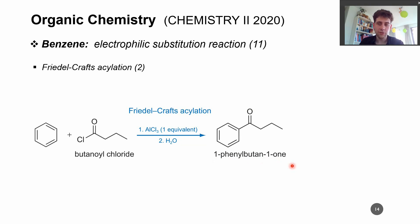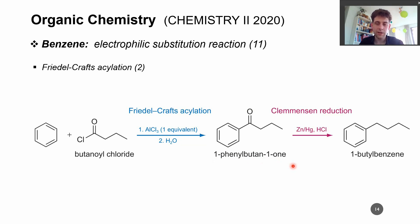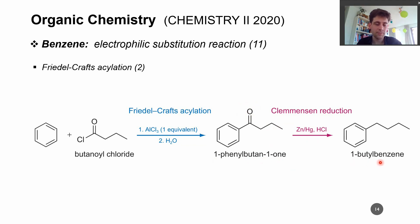From there you can nicely go to the monoalkylated product by getting rid of this oxygen atom here by using the so-called Clemmensen reduction. Here you are using zinc in mercury with hydrochloric acid, and that selectively removes your carbonyl group. So you end up with the originally desired 1-butylbenzene.